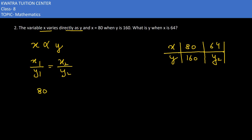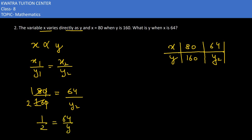We substitute: x1 is 80, y1 is 160, x2 is 64, and y2 is unknown. The zeros cancel, and 8 over 16 simplifies to 1 over 2. So 1 over 2 equals 64 over y2. The y2 moves to the left side and 64 multiplies through, which gives y2 equals 128.